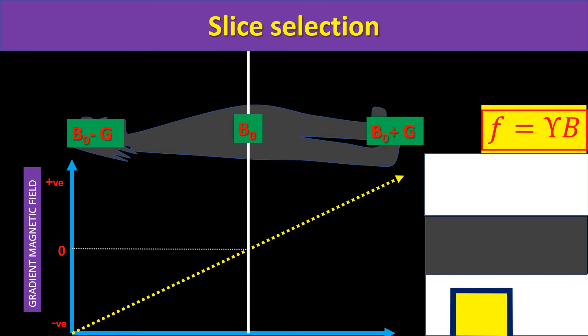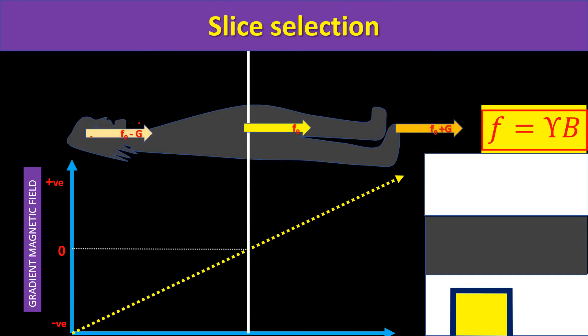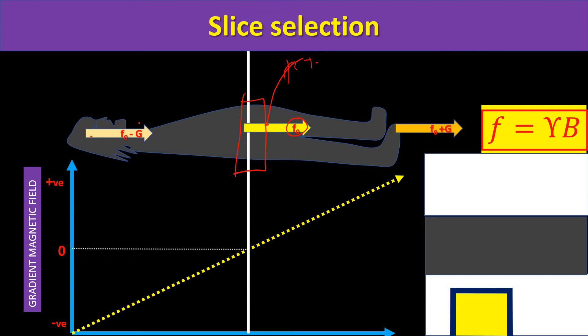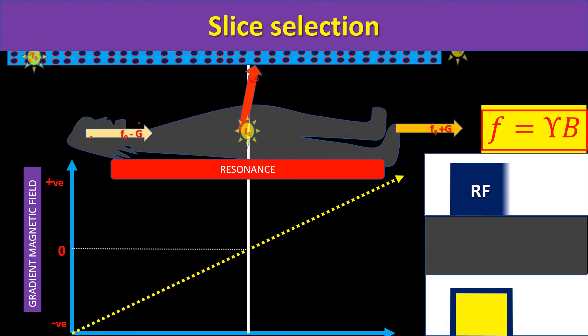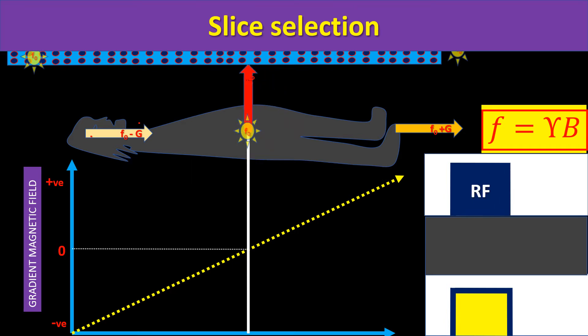Different areas of the body experience different magnetic fields. If I want to measure a particular part, I give an RF pulse with the same frequency as F0. Only that portion of the body's hydrogen protons will flip 90 degrees and can be measured. When I give an RF pulse of frequency F0, only the part of the body experiencing F0 frequency is flipped. The signal I receive comes only from that part of the body having frequency F0 — this is how we select a particular slice.